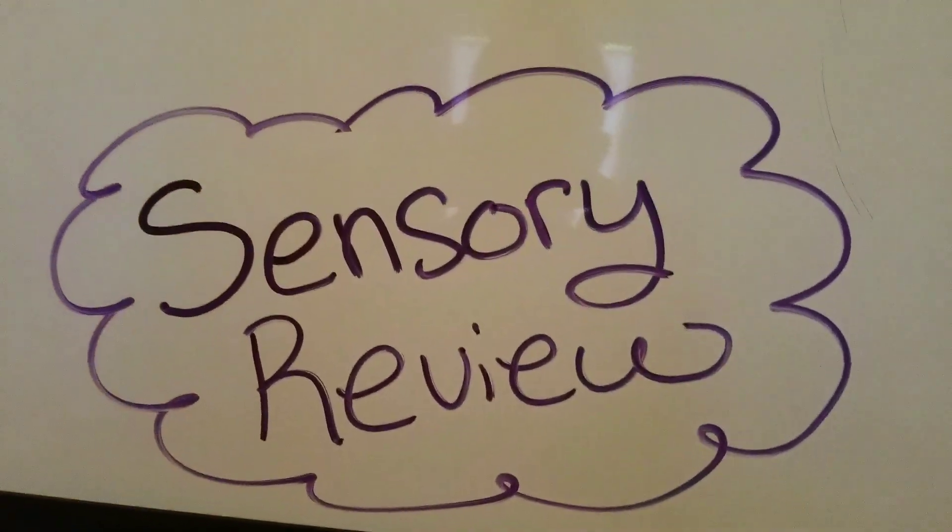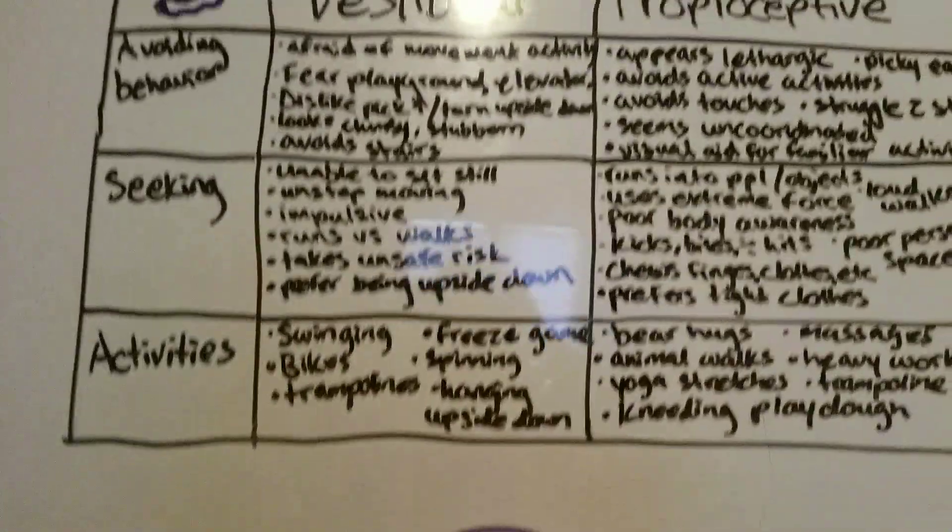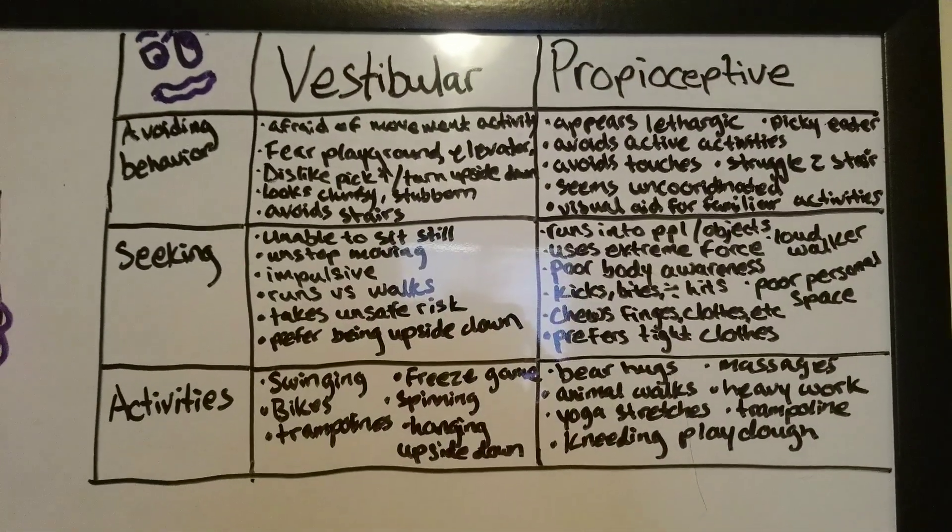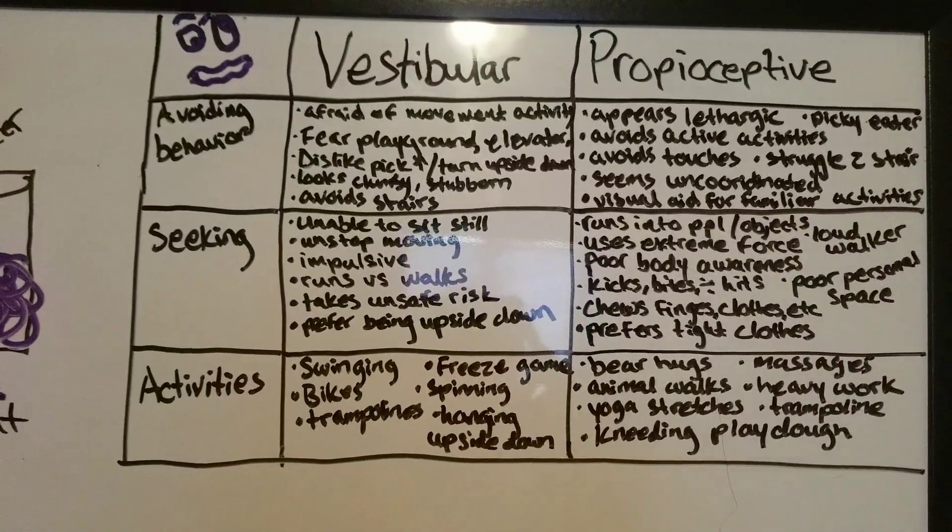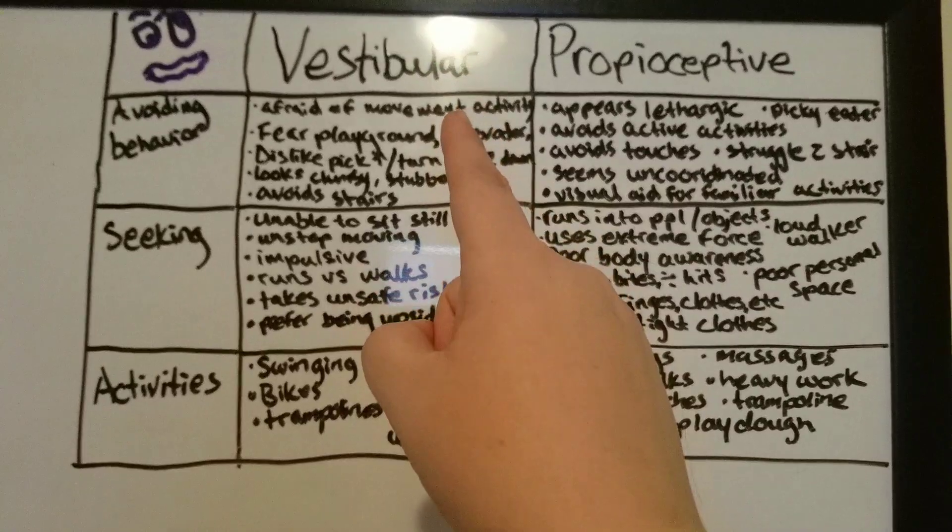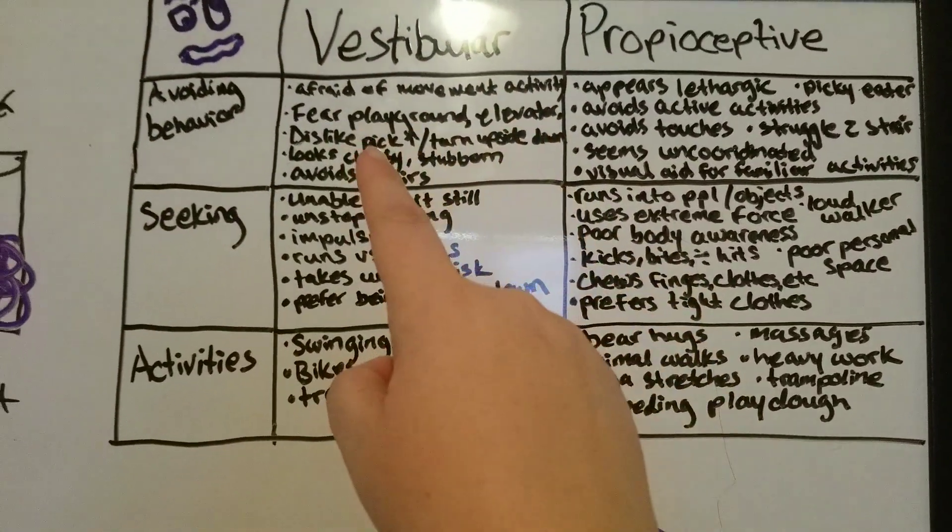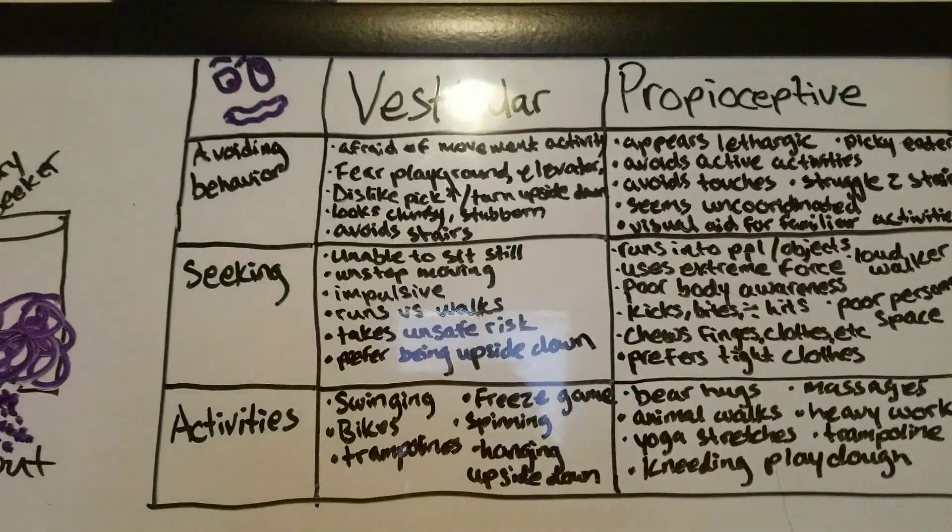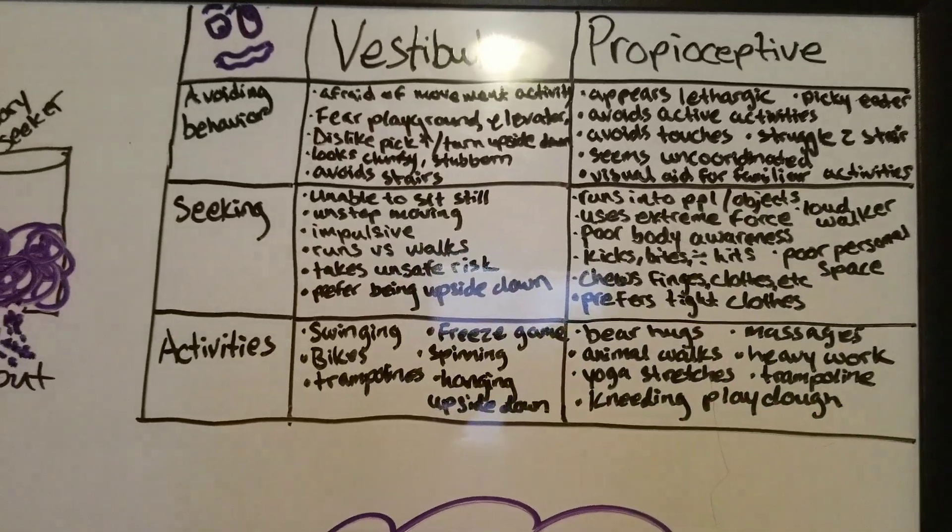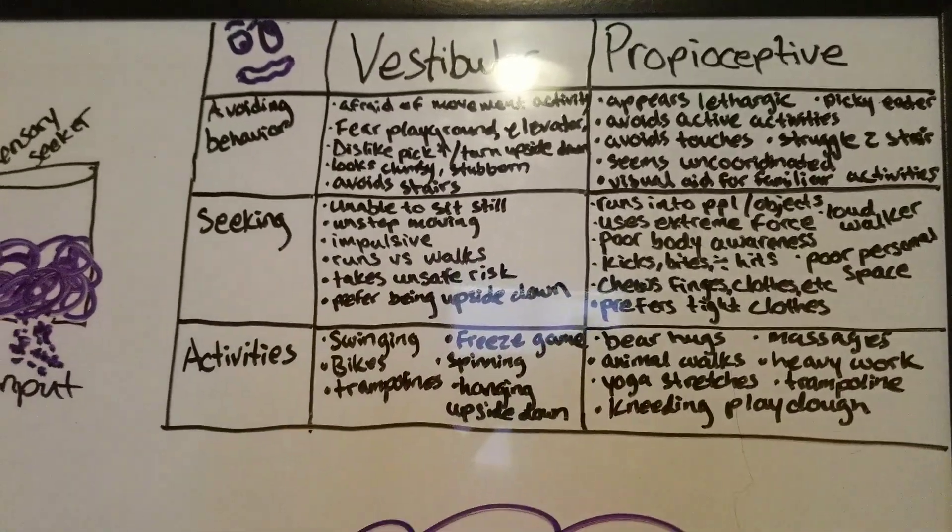We're moving over from our sensory review. I want to make sure that you can see this full thing. The first thing we're going to go over is vestibular. Now, if an individual has avoiding behaviors,